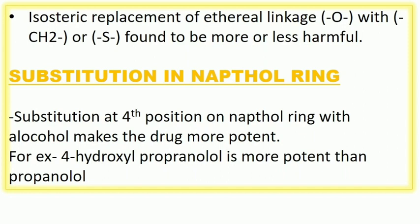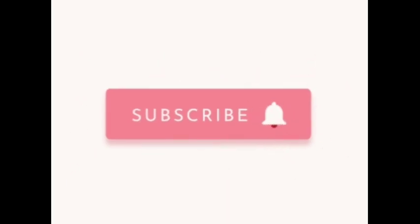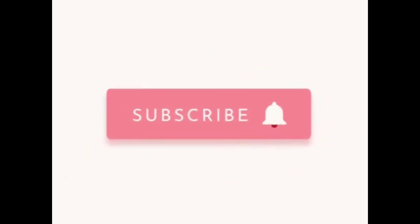Moving to the last point: substitution in the naphthalene ring. Substitution at the fourth position on the naphthalene ring with an alkyl or hydroxyl group makes the drug more potent. For example, 4-hydroxyl-propranolol is more potent than propranolol. Thank you for watching — if you liked this video, drop a comment below and don't forget to subscribe to the channel.